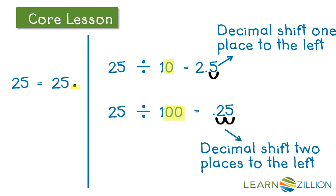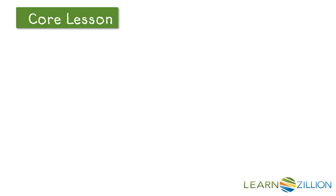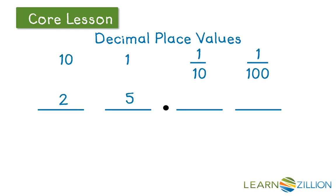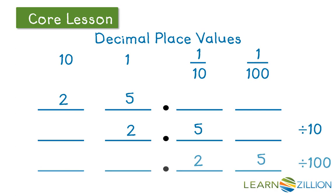Remember, dividing by 100 is like dividing by 10 twice. When we divide by 100, we shift the decimal point two places to the left. So, the 2 in 25 shifts from the tens place two spaces to the tenths place, and the 5 shifts two places from the ones place to the hundredths place. When dividing by a power of 10, we shift the decimal point the same number of zeros as in the divisor — 10 or 100. As the decimal point moves to the left, the value of the number becomes less and less.